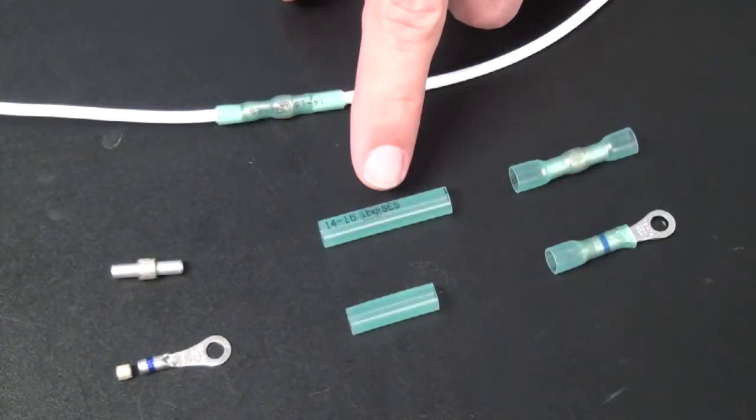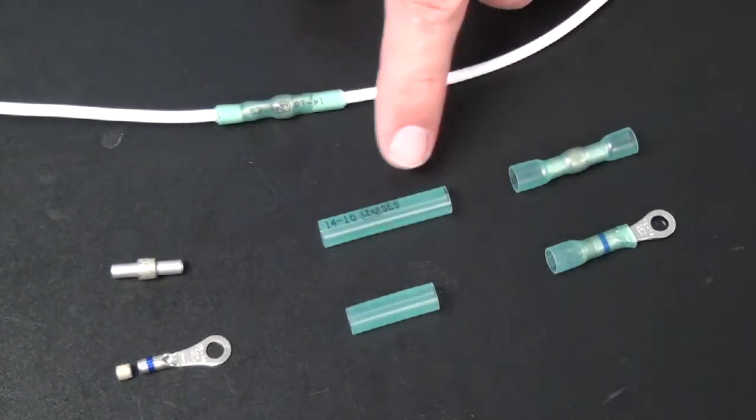These components are insulated with adhesive line, dual wall, heat shrink tubing to prevent wire corrosion.